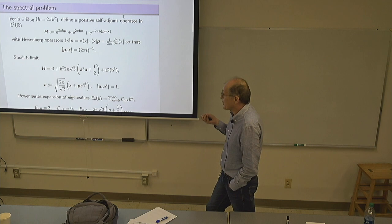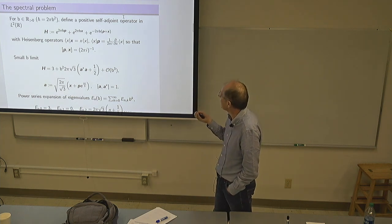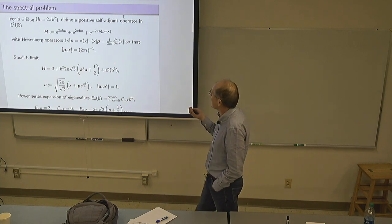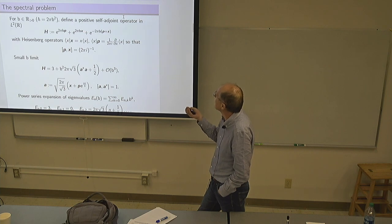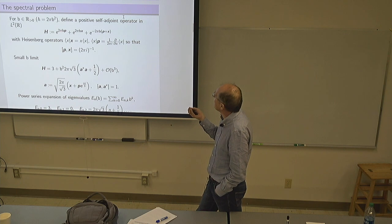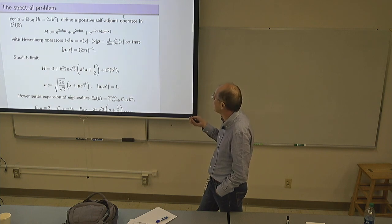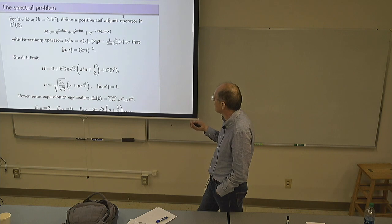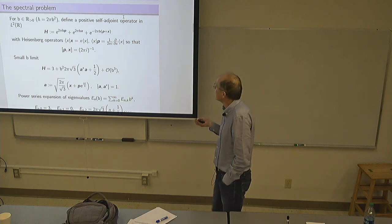One approach is to expand in power series of b. The normalization of the position and momentum is standard, not depending on any Planck constant, and we have a family of Hamiltonians indexed by b. The first term will be three, coming from three exponentials. The linear term in b vanishes due to the arrangement of signs in the exponents, and the first non-vanishing term will be quadratic in b. You can identify it with a standard harmonic oscillator Hamiltonian, where the annihilation operator a is a complex combination of x and p.